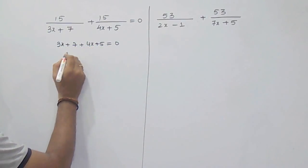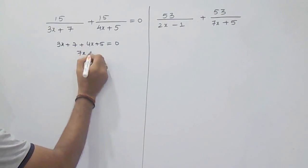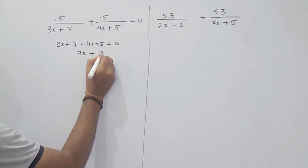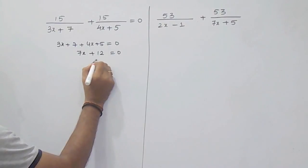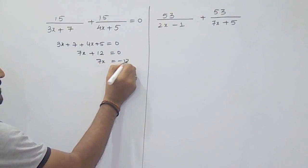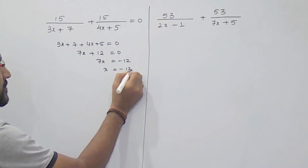3x plus 4x, that is 7x, and 7 plus 5, that is 12, equals 0. So it will be 7x equals minus 12. So x is minus 12 by 7.